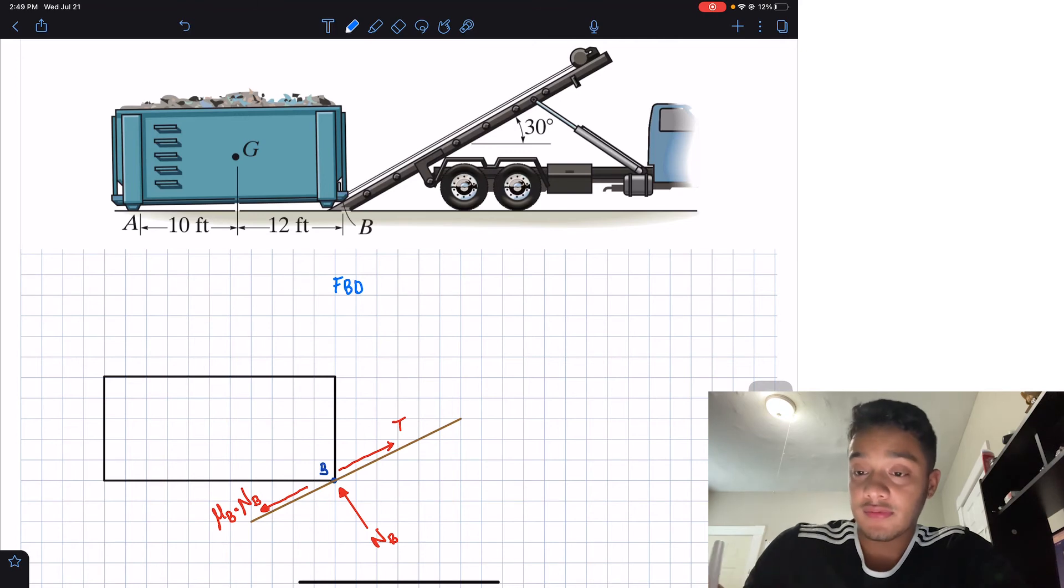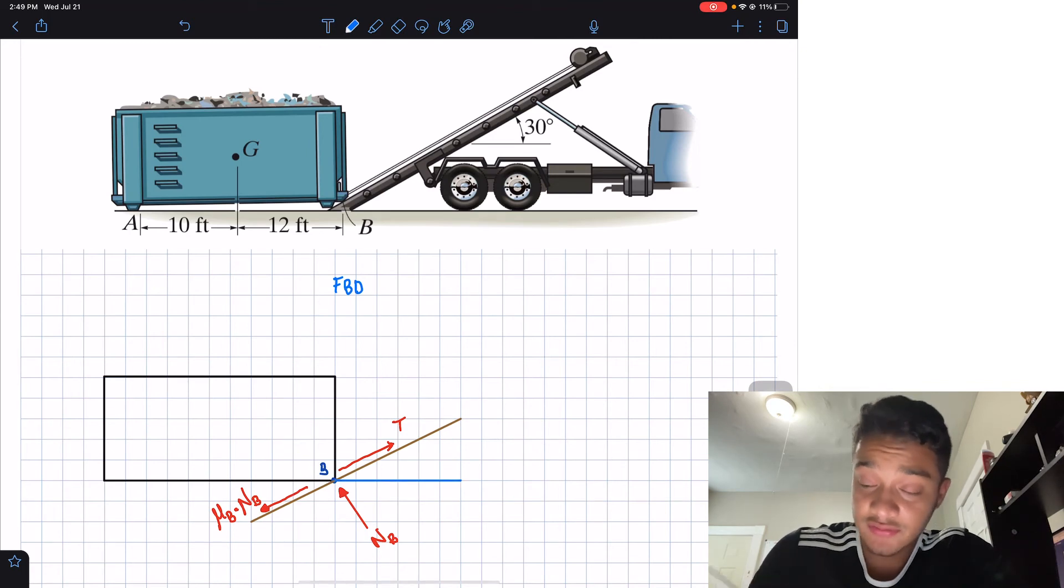And the reason why is that, first of all, we know that from the x-axis, this tension T or this surface is inclined by 30 degrees, right?